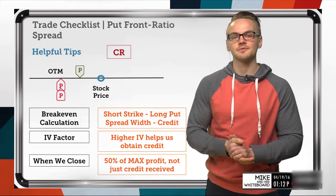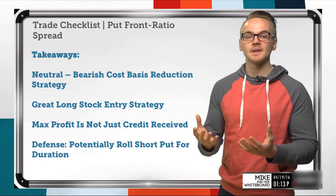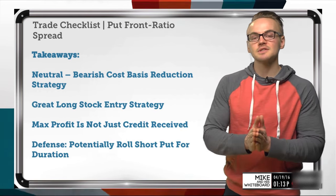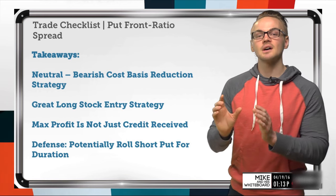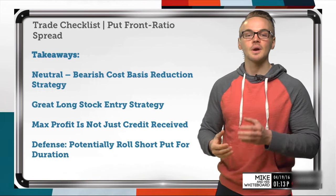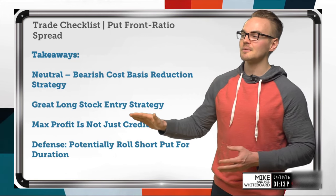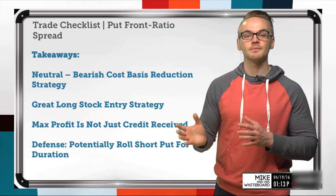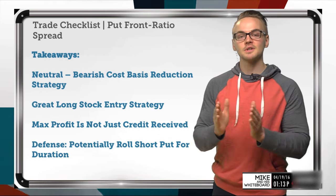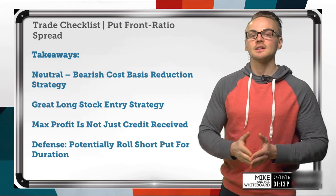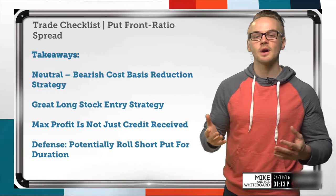Key takeaways: this is a neutral-to-bearish cost basis reduction strategy. We can be profitable if the spread expires worthless, or if the stock price goes down to our short strike. Even if it breaches that strike, our break even at 84.50 is much better than the 89 break even from just selling the naked put. Max profit is not just the credit received — it's the credit plus the embedded long put spread width. We can profit if the stock price goes down to our short strikes, which is where max profit is realized.